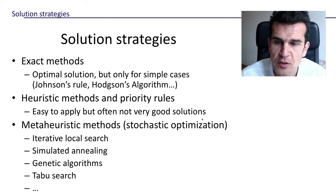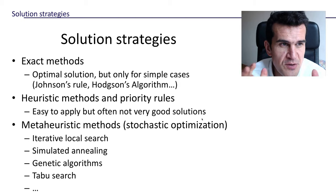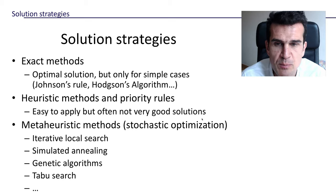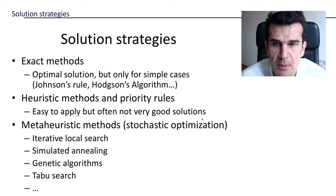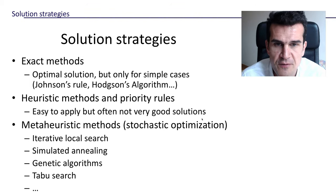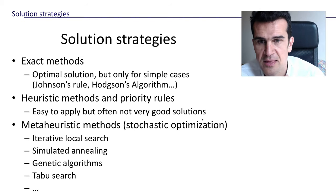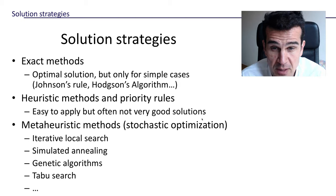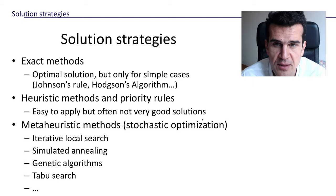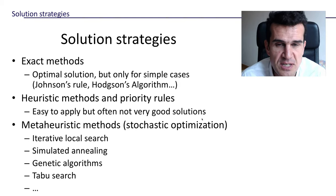In this video we're going to explore different solution strategies and approaches to solve scheduling problems or at least come up with reasonably good solutions. Mainly there are three different approaches. The first one is exact methods — algorithms that give us the best solution exactly. Unfortunately we don't have many of these, and the ones we have only work for very simple cases: very small instances like two, three, or four machines and for a specific performance measure.